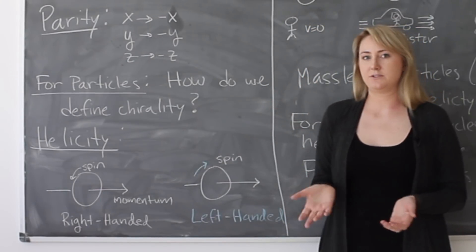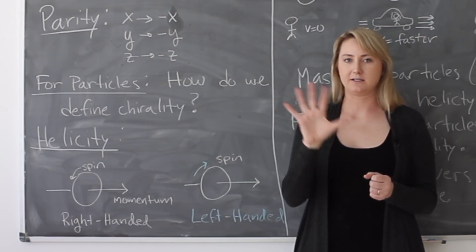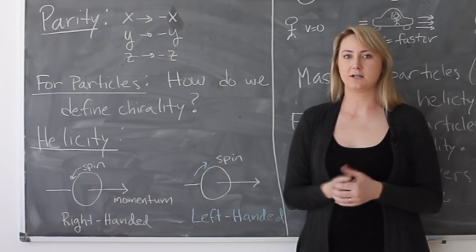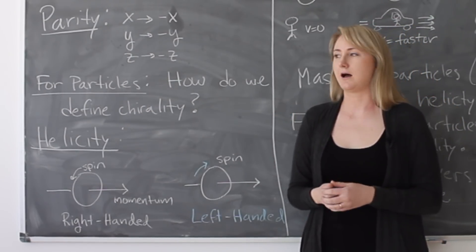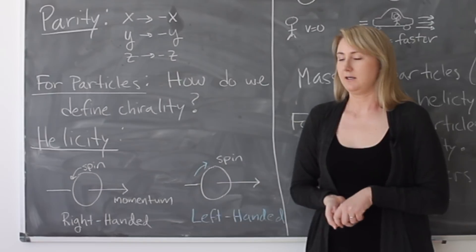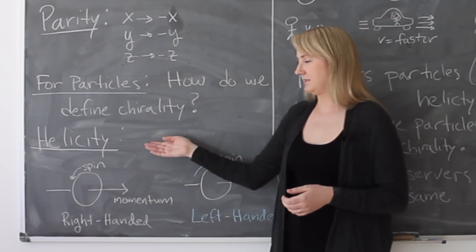For massive objects, it's pretty easy to talk about chirality because it really has to do with the shape of the object in three dimensions. But for particles, which are so small we can't see their shapes, how do we define chirality? And we start with helicity.